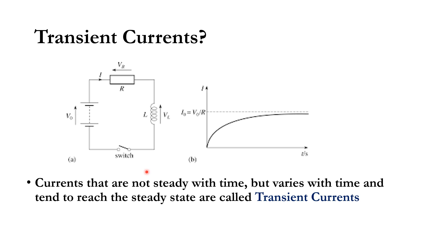Suppose we have a circuit with a DC voltage and a resistor. In this case, we have a situation where at an instant we have the maximum value. Now, if we add an inductor in series, the current is not instantaneous — it takes time to reach the steady state. Let's study transient currents in this module.